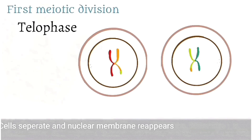Finally, in the telophase, the cells separate and the nuclear membrane reappears, putting an end to the first meiotic division. The first meiotic division is followed by a short interphase, which differs from the usual interphase in that there is no duplication of DNA.